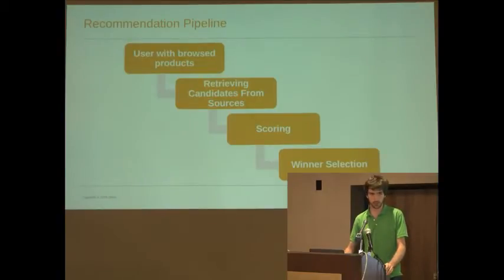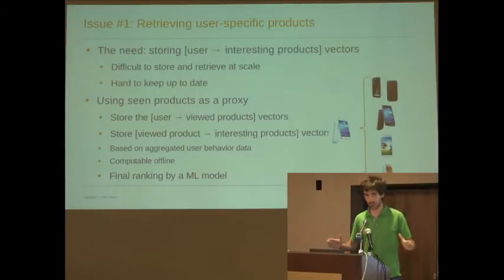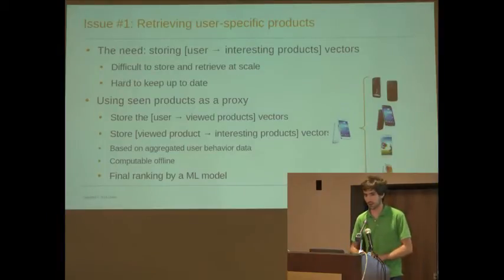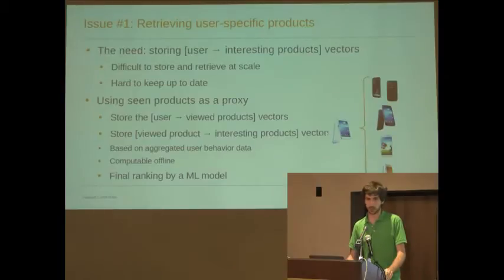There are a bunch of issues that arise when you try to implement this at scale. First off, how do you retrieve user-specific products? Ideally, for each user, every time you want to display an ad, you'd be able to look at the entire catalog and look at all the possible interactions between the catalog items and the items that the user has seen, rank that, and display the top-end items. But that's extremely hard to keep up to date — you can't possibly pass a million items in a few milliseconds. So we use seen products as a proxy.